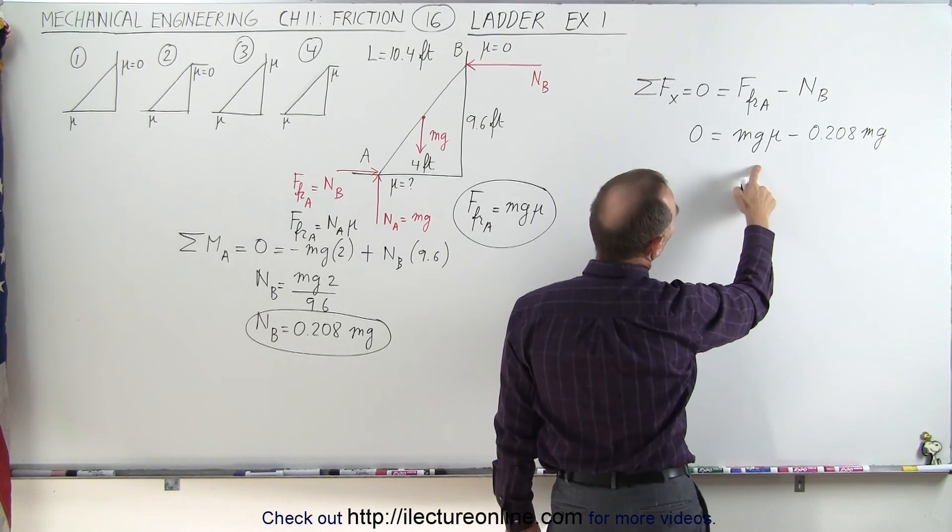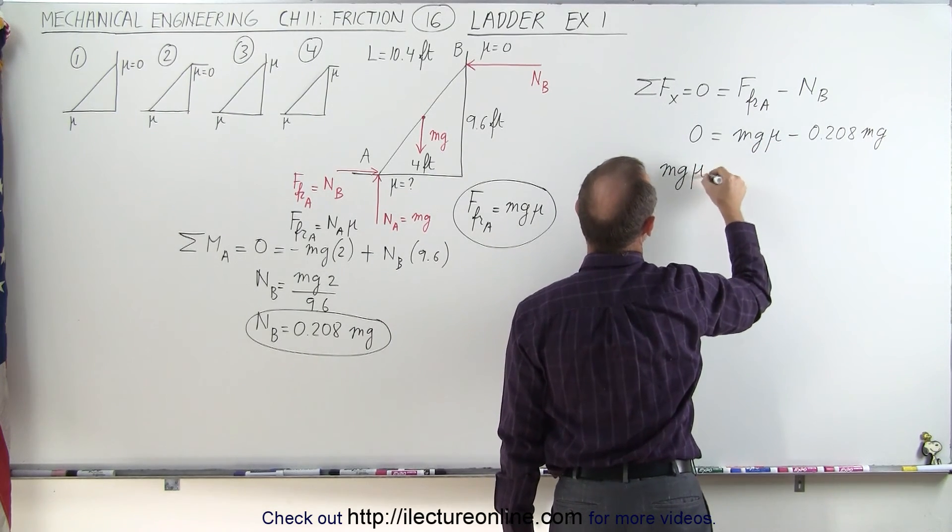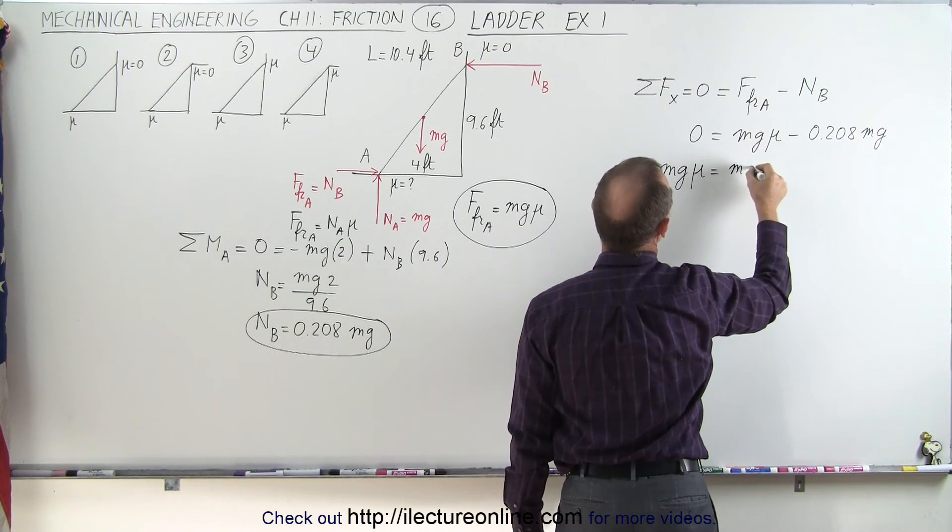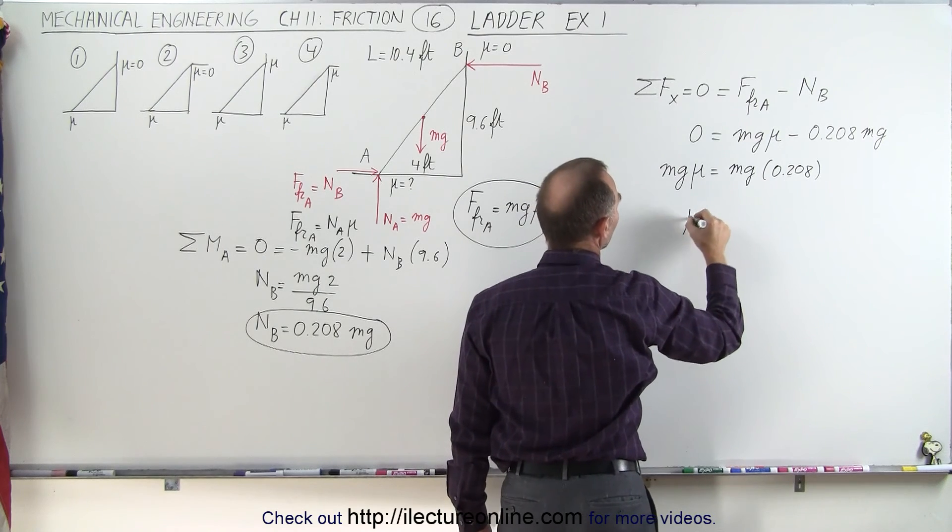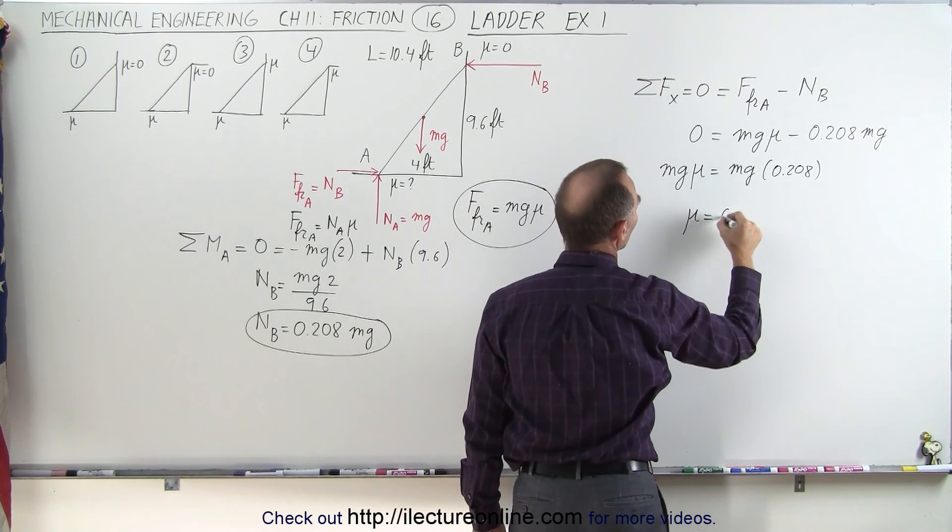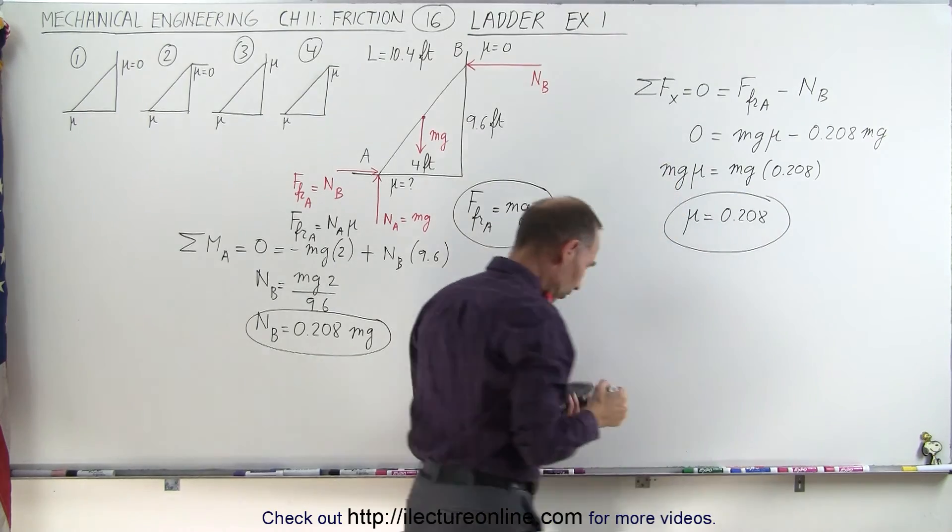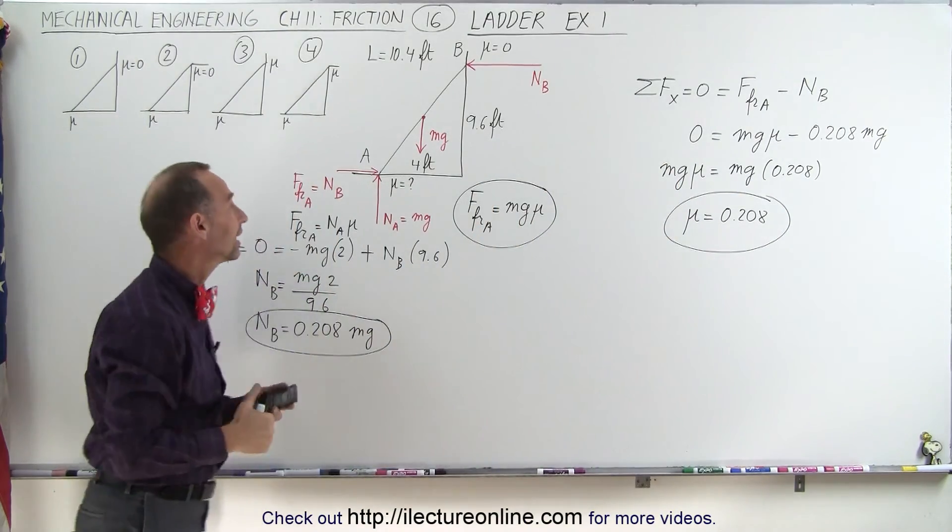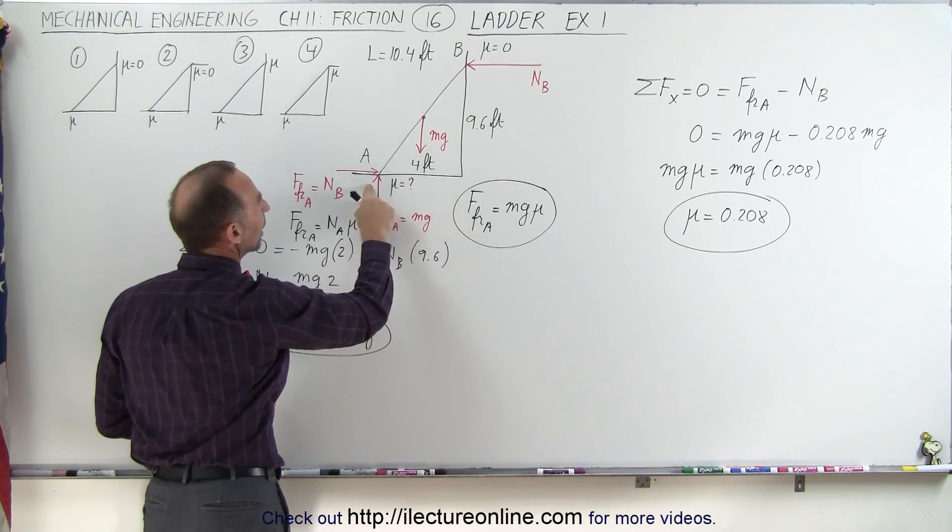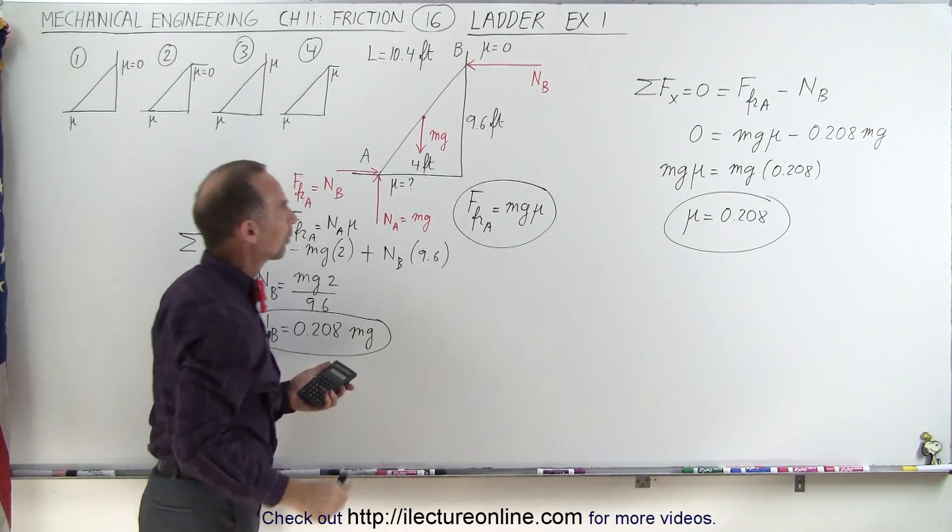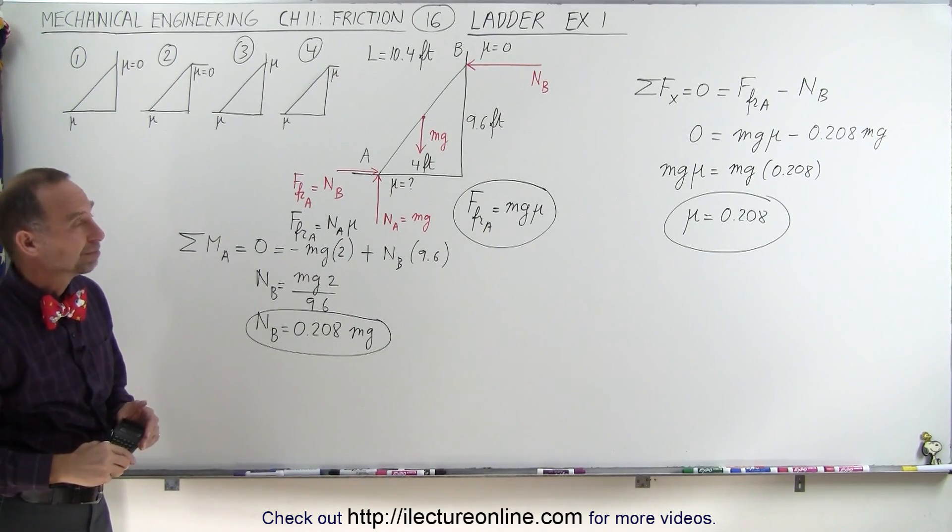Which means if we solve this for Mu, we turn the equation around, we get Mg Mu is equal to Mg times 0.208. So from this, we can conclude that the coefficient of friction must be 0.208. And that's the coefficient of friction required to keep the ladder from sliding when it's 4 feet from the wall at the bottom and touching the wall 9.6 feet above the ground. And that's how that's done.